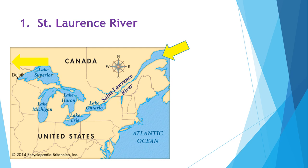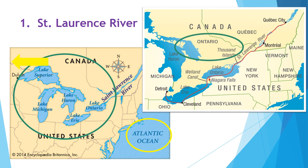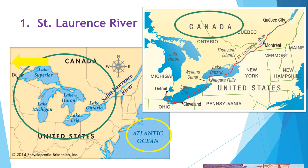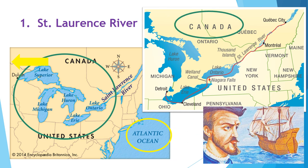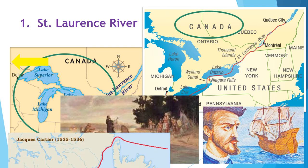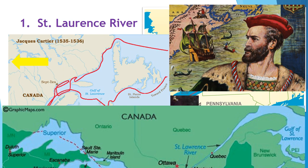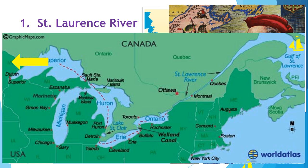The St. Lawrence River connects the Great Lakes with the Atlantic Ocean. It forms part of the border between eastern Canada and the state of New York. Many explorers used this waterway as a water road into the unknown New World, hoping that if they followed it far enough west, they could get to the Pacific Ocean. Draw a water road next to your note on the St. Lawrence River.